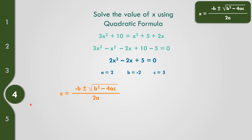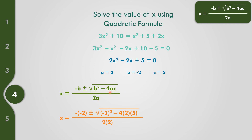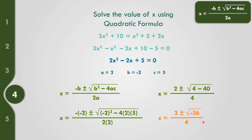Replacing values into the quadratic formula: negative times negative 2, plus or minus the square root of negative 2 squared minus 4 times A equals 2 times C equals 5, all over 2 times 2. Negative times negative gives positive 2. Negative 2 times negative 2 equals positive 4. Negative 4 times 2 times 5 equals negative 40. So 4 minus 40 equals negative 36. The value under the radical is negative, so there are no real solutions.